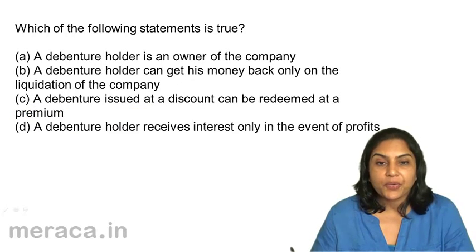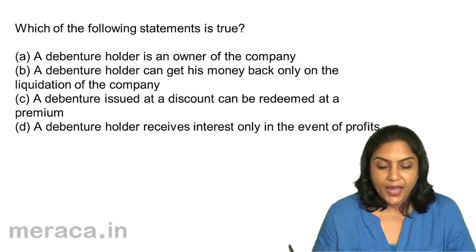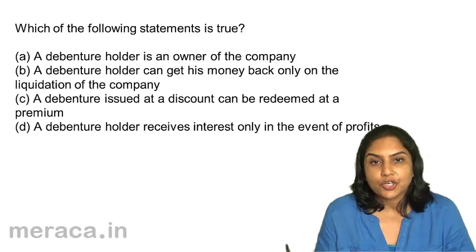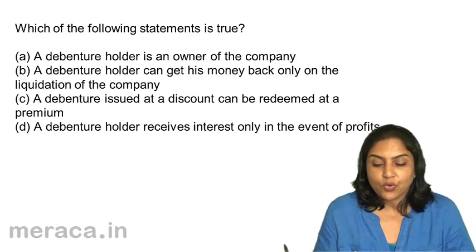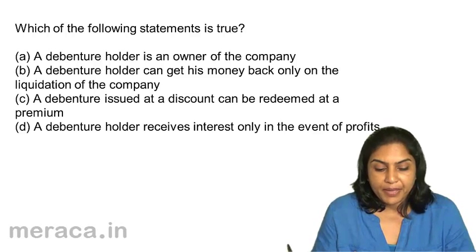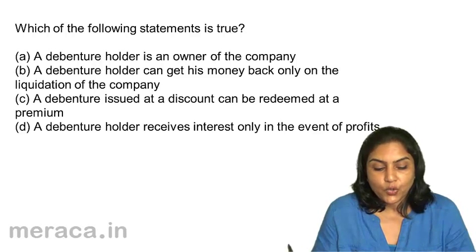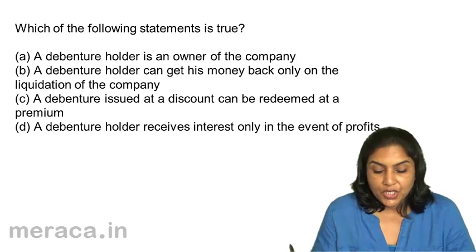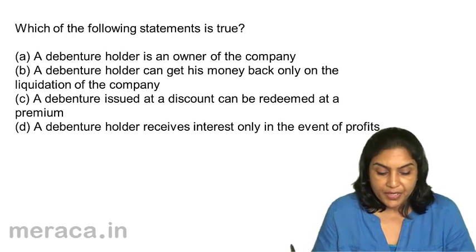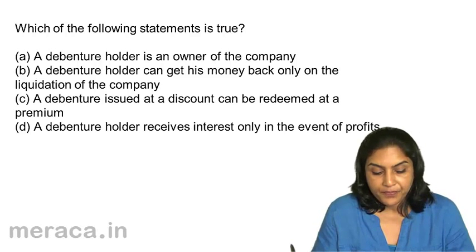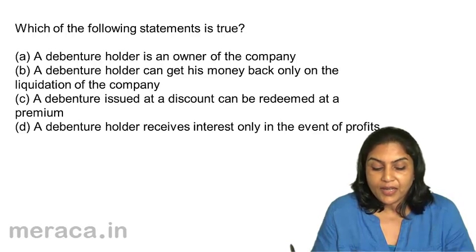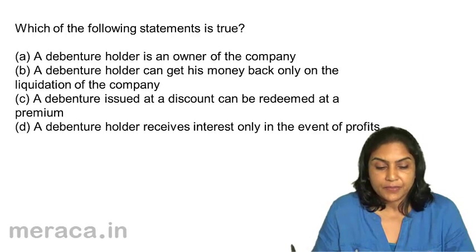Next. Which of the following statements is true? A. A debenture holder is an owner of the company. B. A debenture holder can get his money back only on the liquidation of the company. C. A debenture issued at a discount can be redeemed at a premium. D. A debenture holder receives interest only in the event of profits.